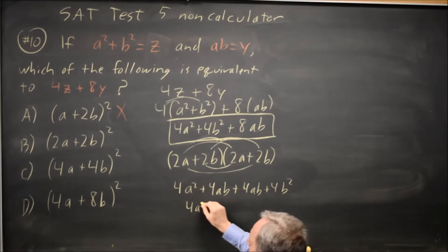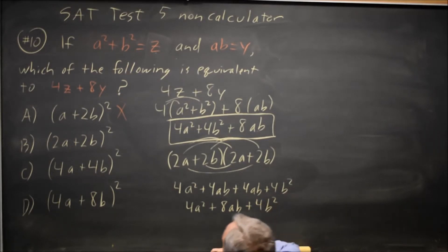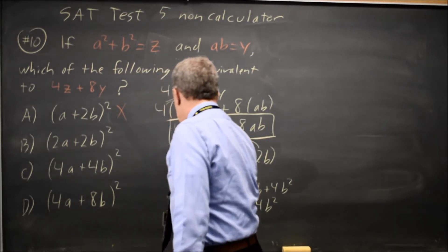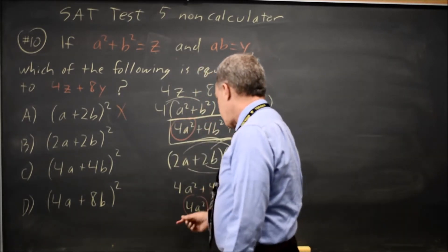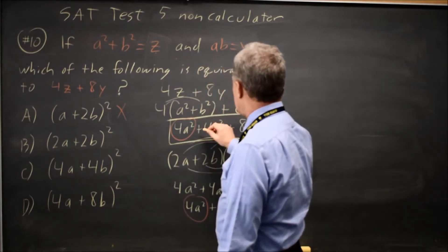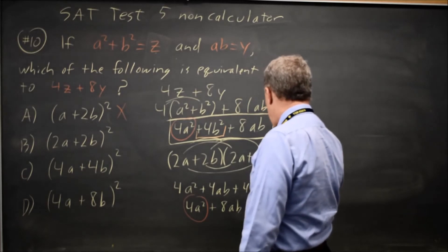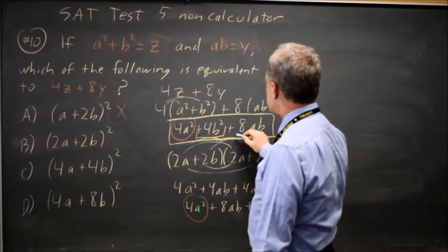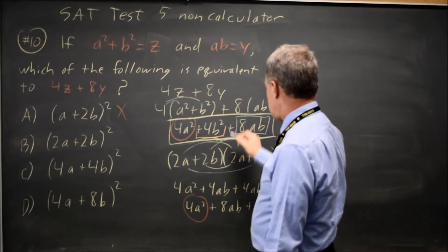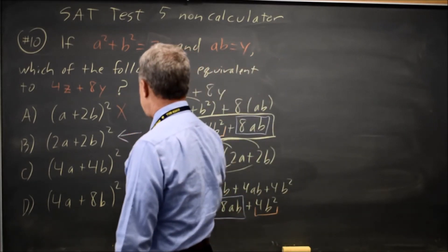So that's 4a squared plus 4ab. And another 4ab is 8ab plus 4b squared. If I compare this with the expression we're trying to match, 4a squared matches 4a squared. 4b squared matches 4b squared. And then 8ab matches positive 8ab. So choice b is the correct answer.